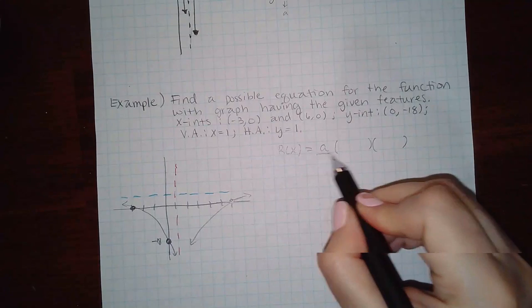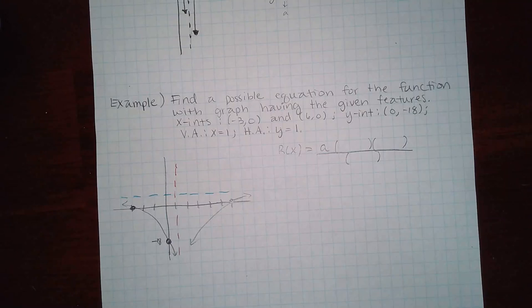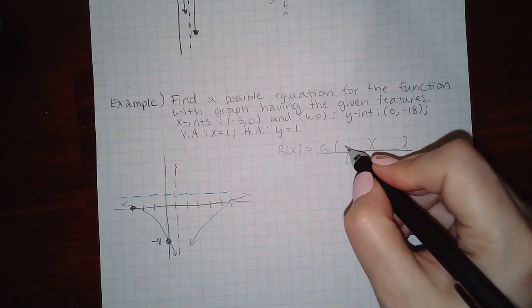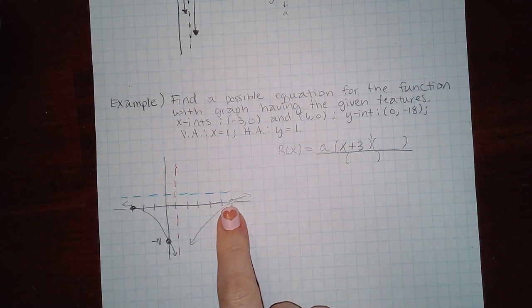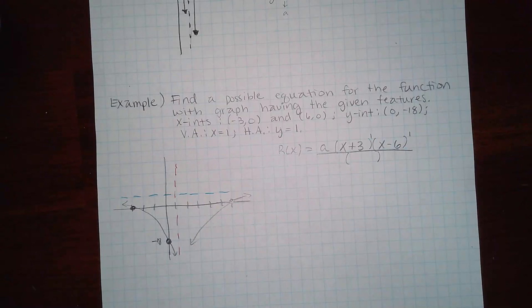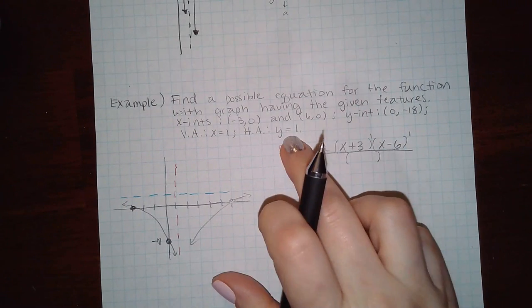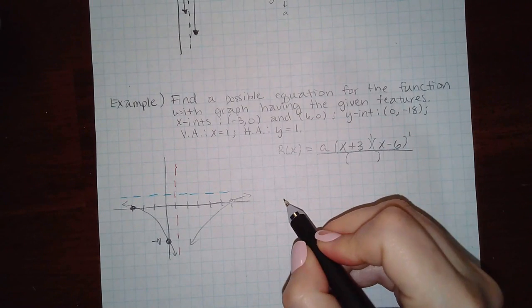You are going to have some coefficient there and you have two x-intercepts so you're going to have two bubbles here, and you only have one vertical asymptote so you're going to have one bubble down there. This crosses through here and crosses through there. If I cross through negative three that means x plus three with the power one, and if I cross through six that means x minus six with a positive one.